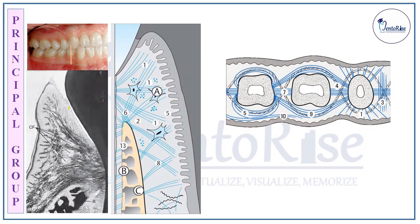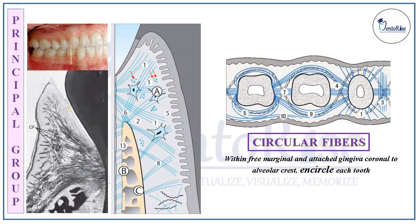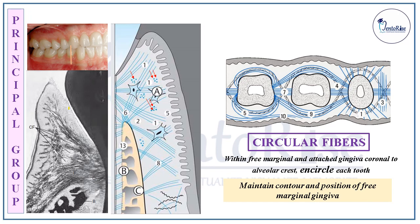The next category of fibers within the principal group are the Circular fibers. The circular fibers are present within the free marginal gingiva and the attached gingiva, but coronal to the alveolar crest, thus encircling each tooth. These circular fibers maintain the contour and position of the free marginal gingiva.